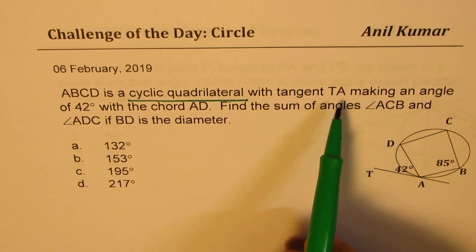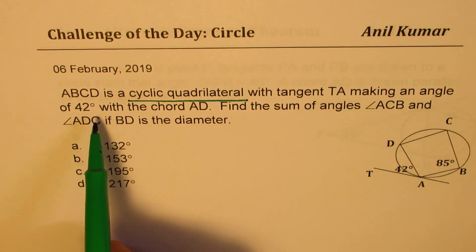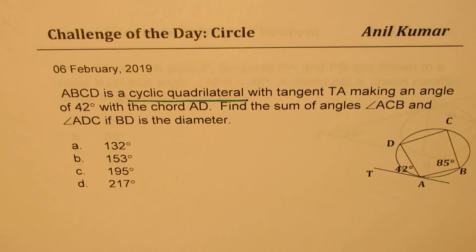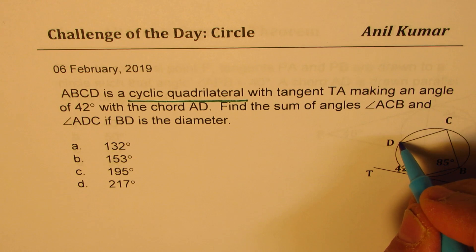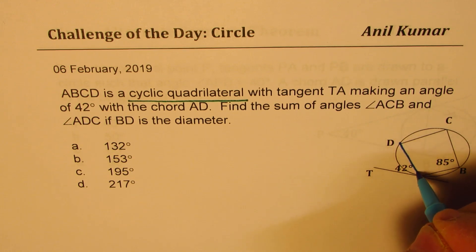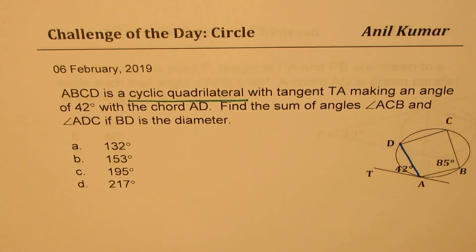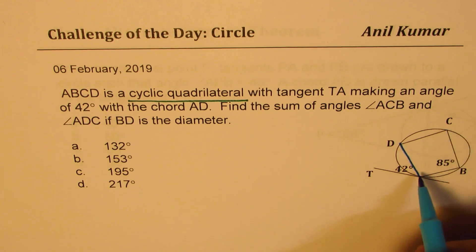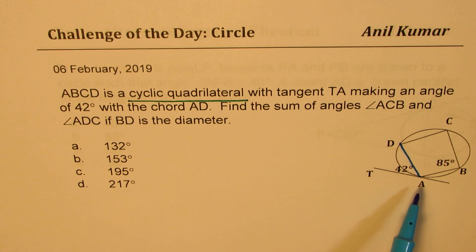Then TA makes an angle of 42 degrees with the chord AD. So when I say chord AD, that means something like this which touches two points on the circle, totally within the circle. And that is called the chord. If it goes through the center, that chord will be a diameter. So AD is the chord.